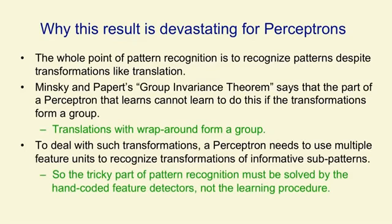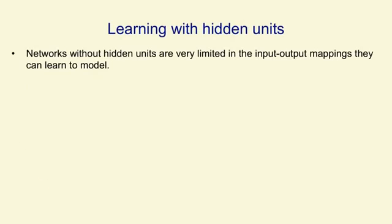The temporary conclusion from this is that perceptrons are no good and therefore neural networks are no good. The longer-term conclusion is that neural networks are only going to be really powerful if we can learn the feature detectors. It's not enough just to learn weights on feature detectors — we have to learn the feature detectors themselves. The second generation of neural networks, which we'll come to in the next lecture, was all about how to learn the feature detectors. But it took 20 years before people figured out how to do that.